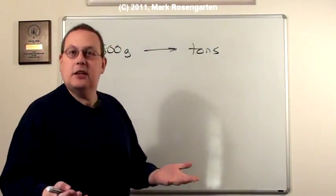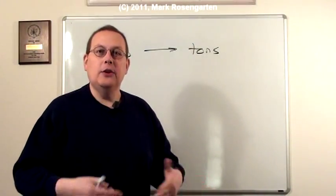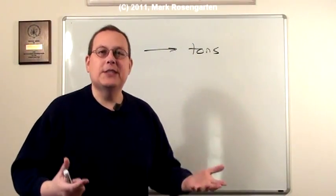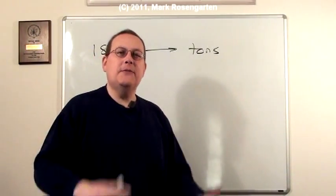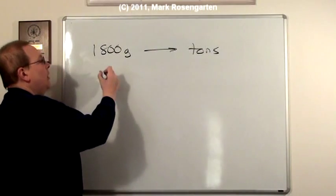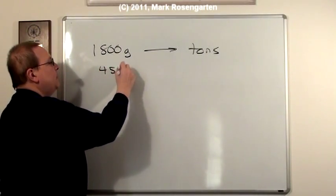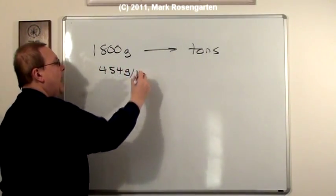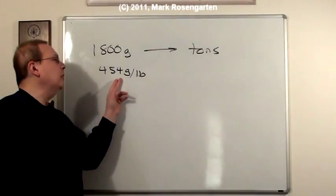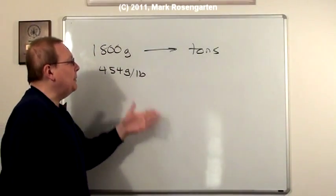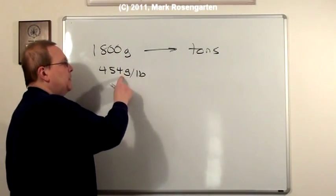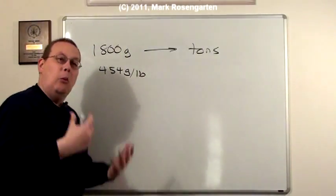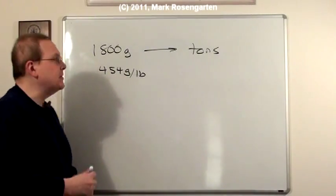Anyway, so you can look these conversion factors up for yourself. You can create your own reference table for them, or there's even apps for your mobile device. Now, there are 454 grams in a pound. I put the smaller unit, grams, on top, and the larger unit, pounds, on the bottom. Because one pound has 454 grams.